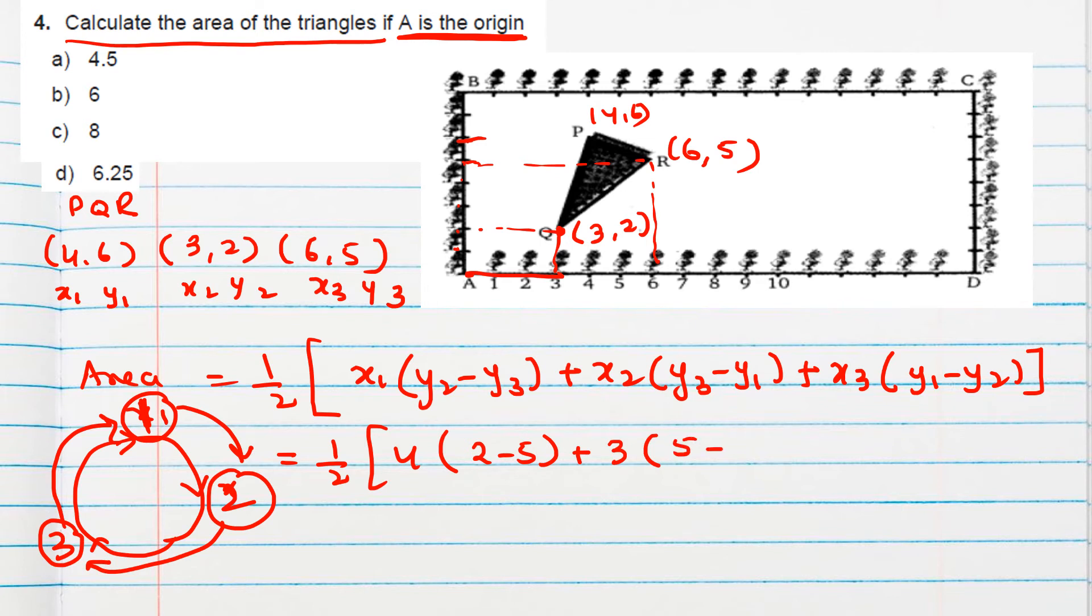y3 minus y1. x3 is 6. y1 minus y2. So finally this will be minus 3. Okay. So minus 12. This is minus 1. So this will be minus 3. And this will be 4. So 24. So 1 by 2. 24 minus 12 means 12. Minus 3 means 9.